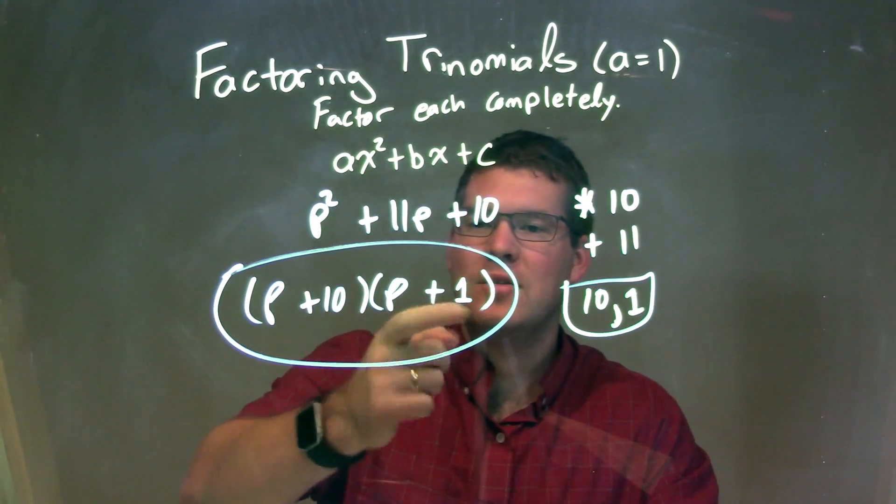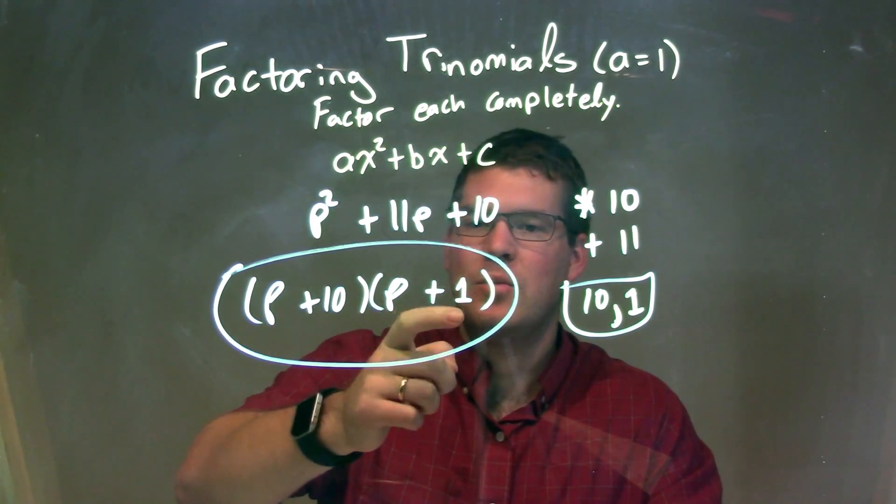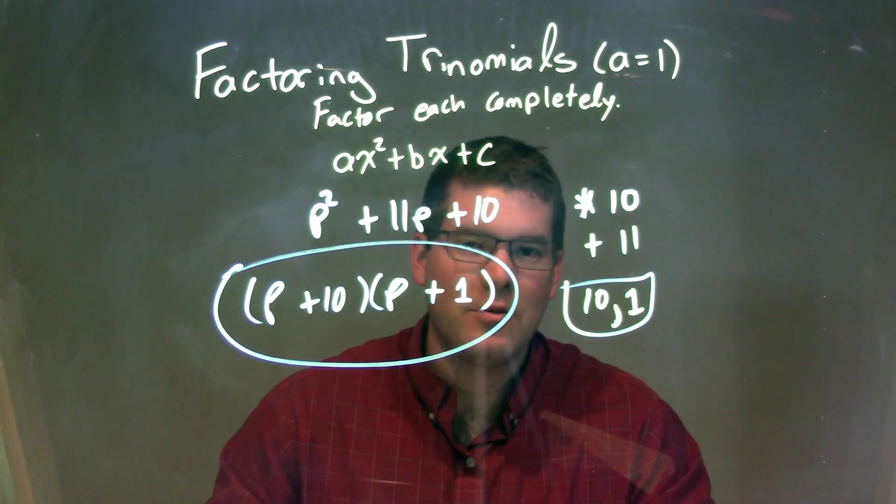So when we factor this out, we have our two parts there, p plus 10 times p plus 1, and there we have it, our final factored form. Thank you.